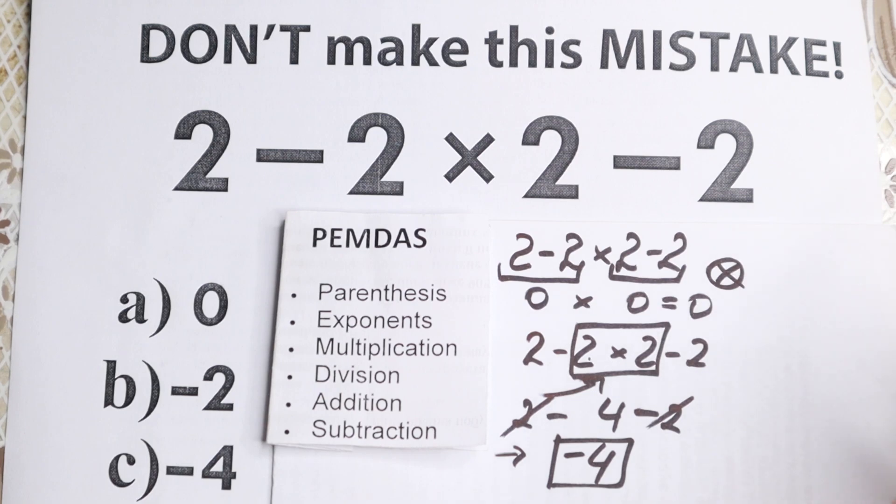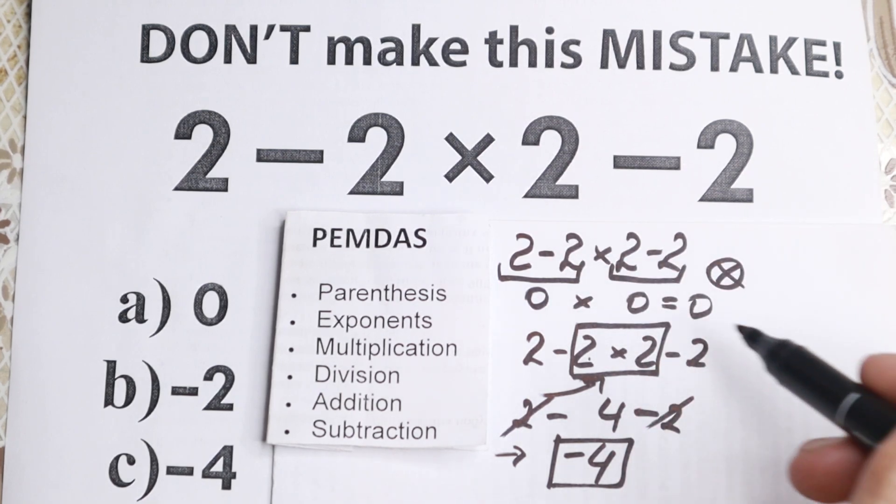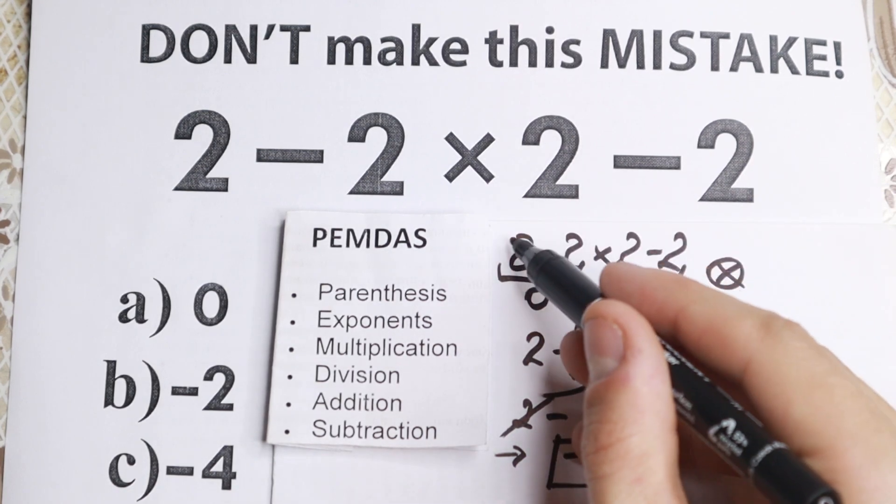But then I ask my students, what do you need to put right here to get this 0? And they answer, maybe exponent, I say, no, what exponent? But parentheses. So if you put parentheses right here,